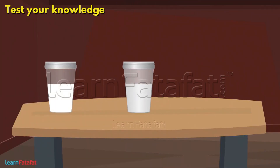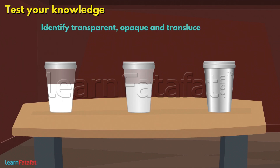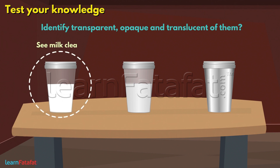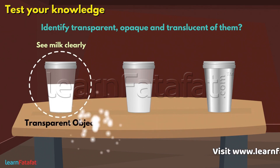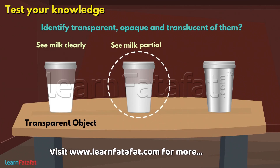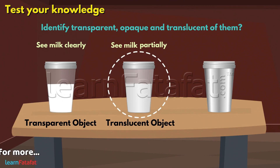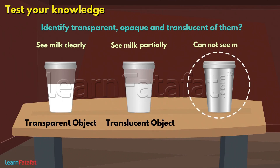Here are three different glasses containing milk. Can you identify the transparent, opaque, and translucent ones? We can clearly see the milk present in the first glass, so this glass is a transparent object. We can see milk in the second glass but only partially, so it is a translucent object. We cannot see the milk present in the third glass; hence, the third glass is an opaque object.